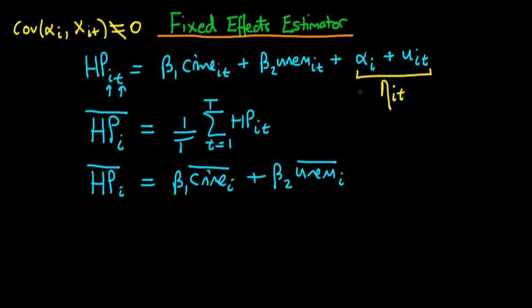When I take the time average of alpha_i, essentially alpha_i doesn't depend on time, so when I try and calculate the average alpha_i I just get 1 over T times T times alpha_i because it doesn't vary across time, hence the average alpha_i is just alpha_i.